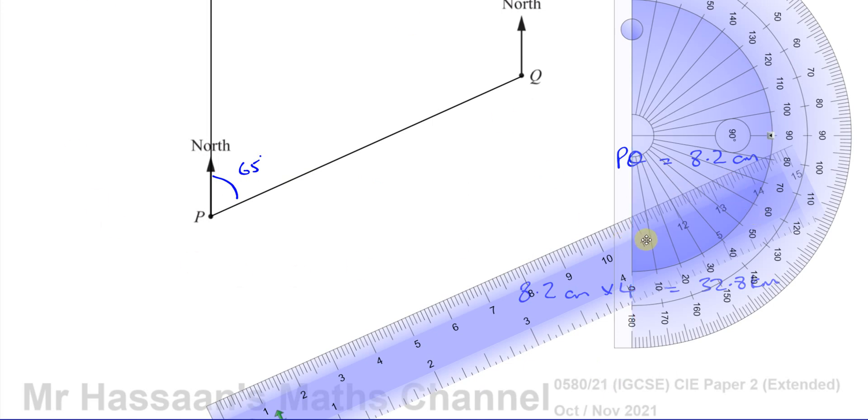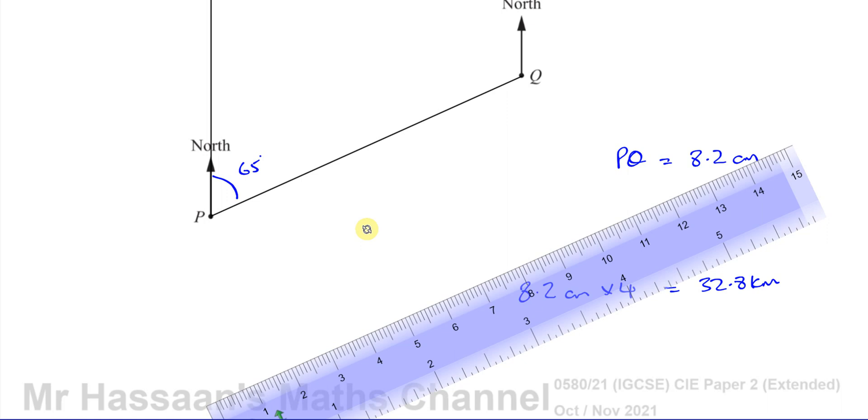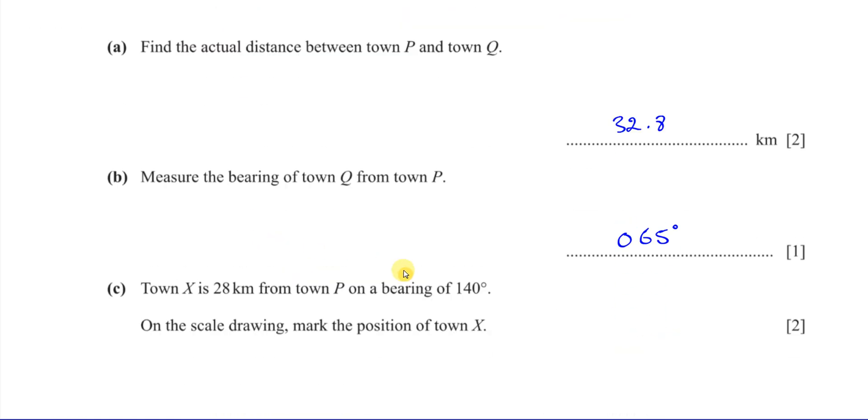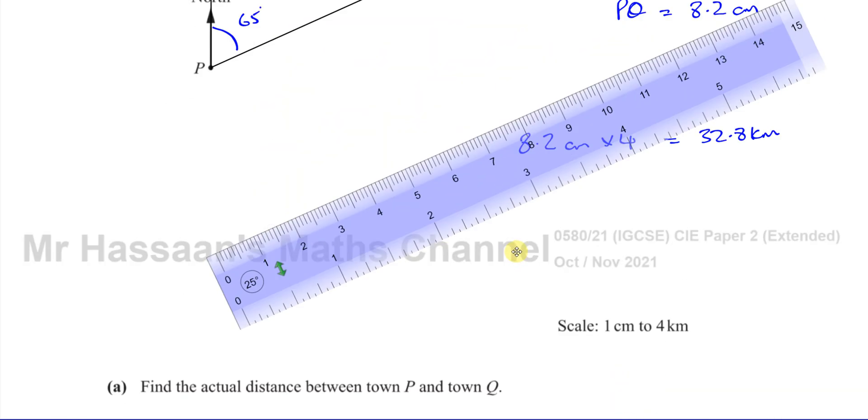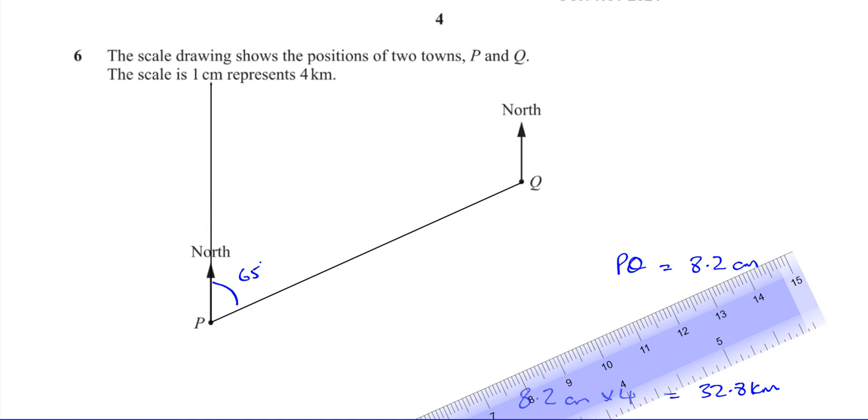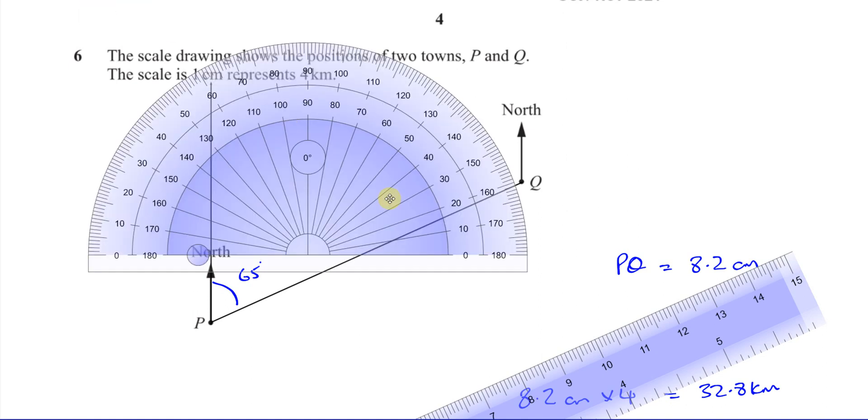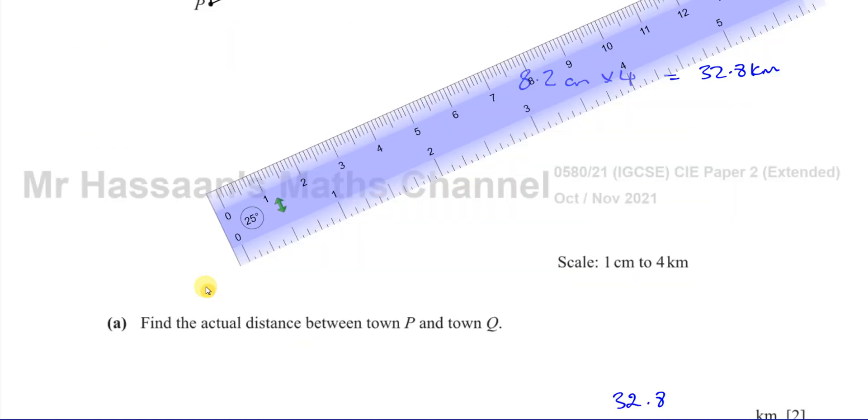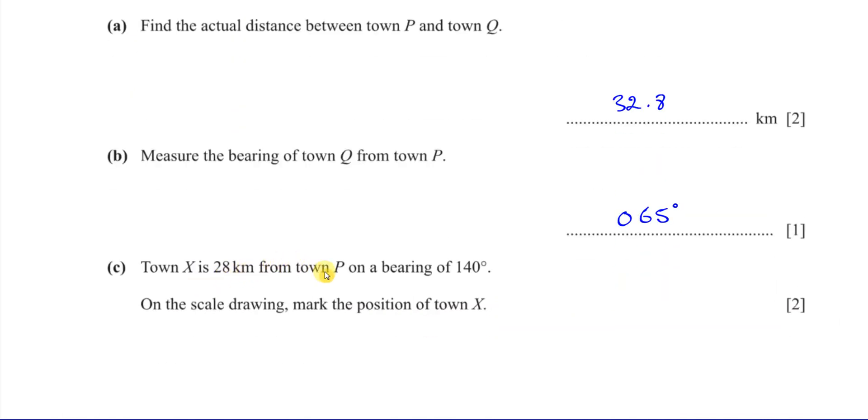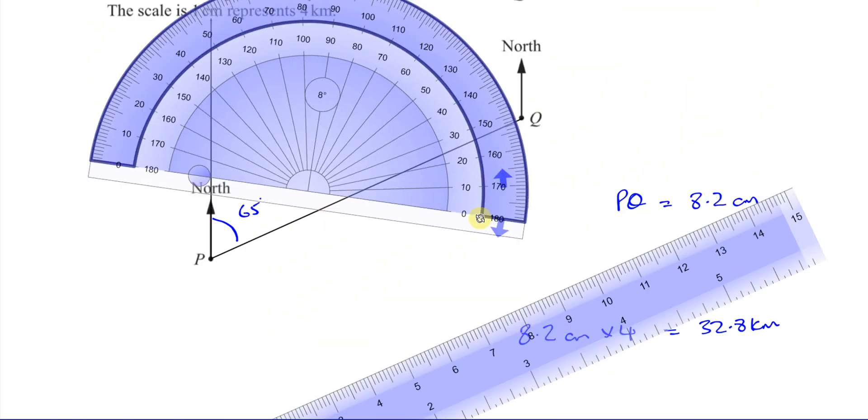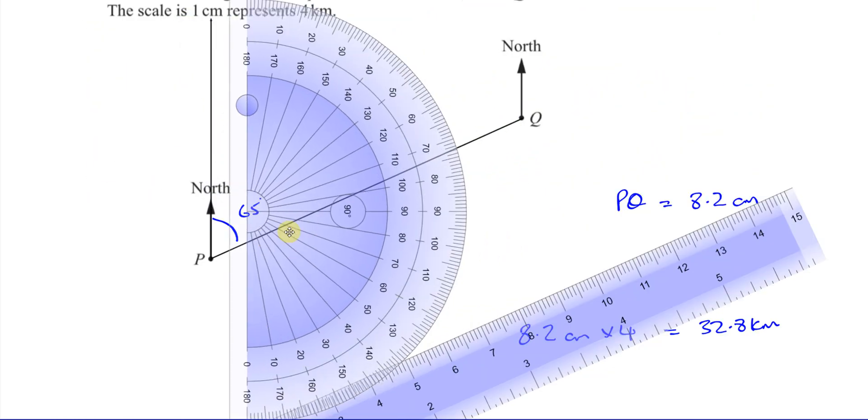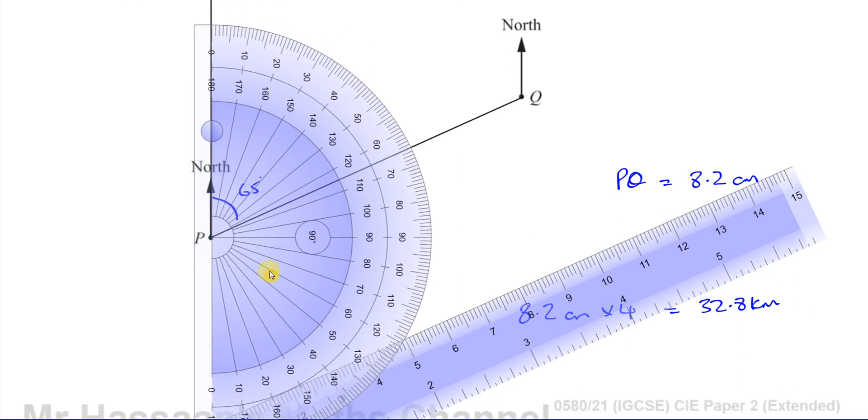All right, so we've used these. I'll leave that there in case I need it. Then it says town X is 28 kilometers from town P on a bearing of 140 degrees. On the scale drawing, mark the position of town X. Okay, so now, first of all, I need my protractor back. All right, so it says town X is 28 kilometers from town P. So again, we're starting from town P, but this time we're bearing of 140.